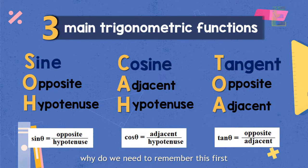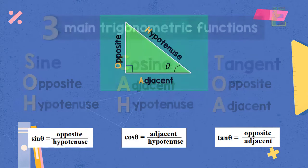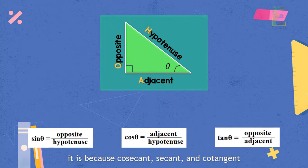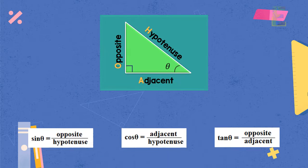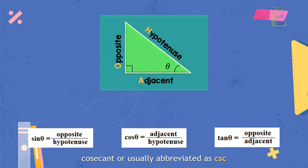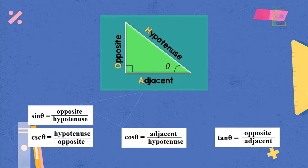Why do we need to remember this first before learning the concept of cosecant, secant, and cotangent? It is because cosecant, secant, and cotangent are just the reciprocal of sine, cosine, and tangent. Cosecant, or usually abbreviated as CSC, is just the reciprocal of sine. Therefore, the cosecant is equal to hypotenuse over opposite.